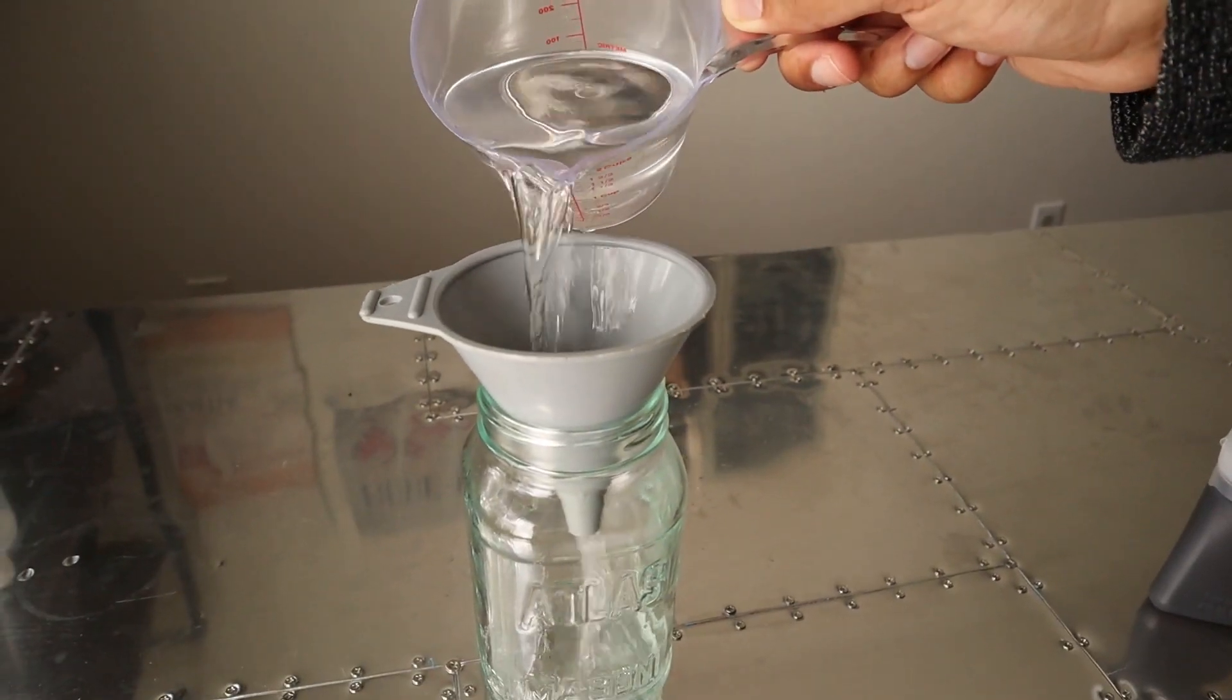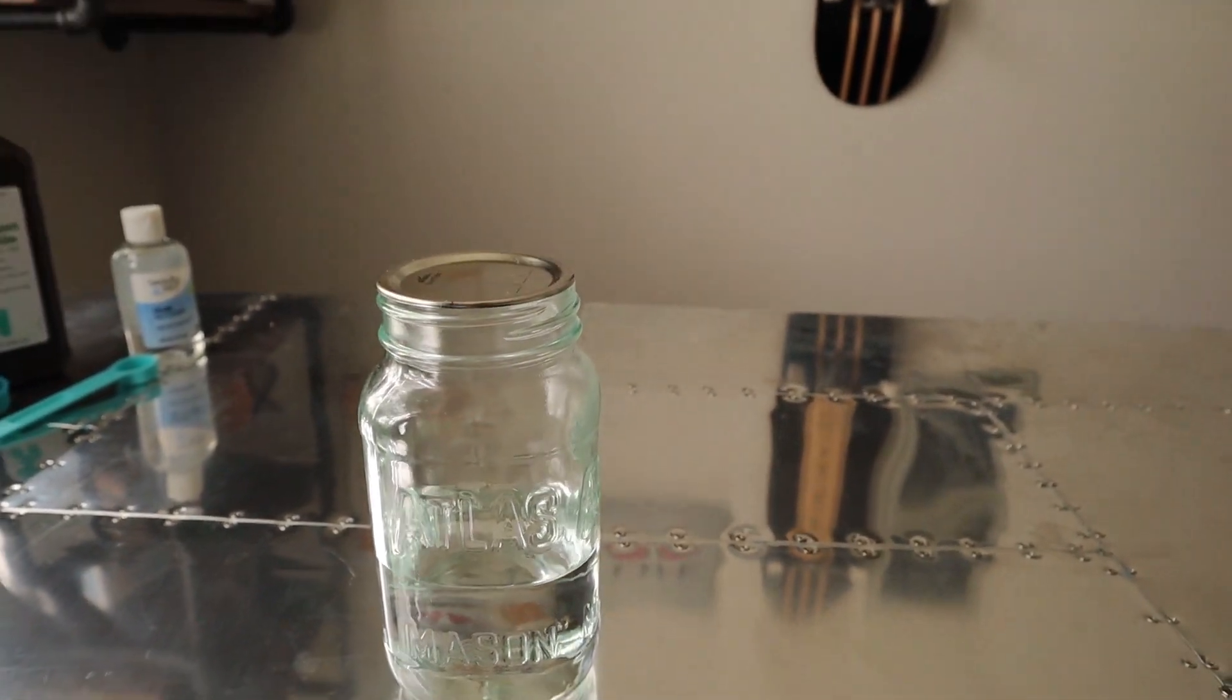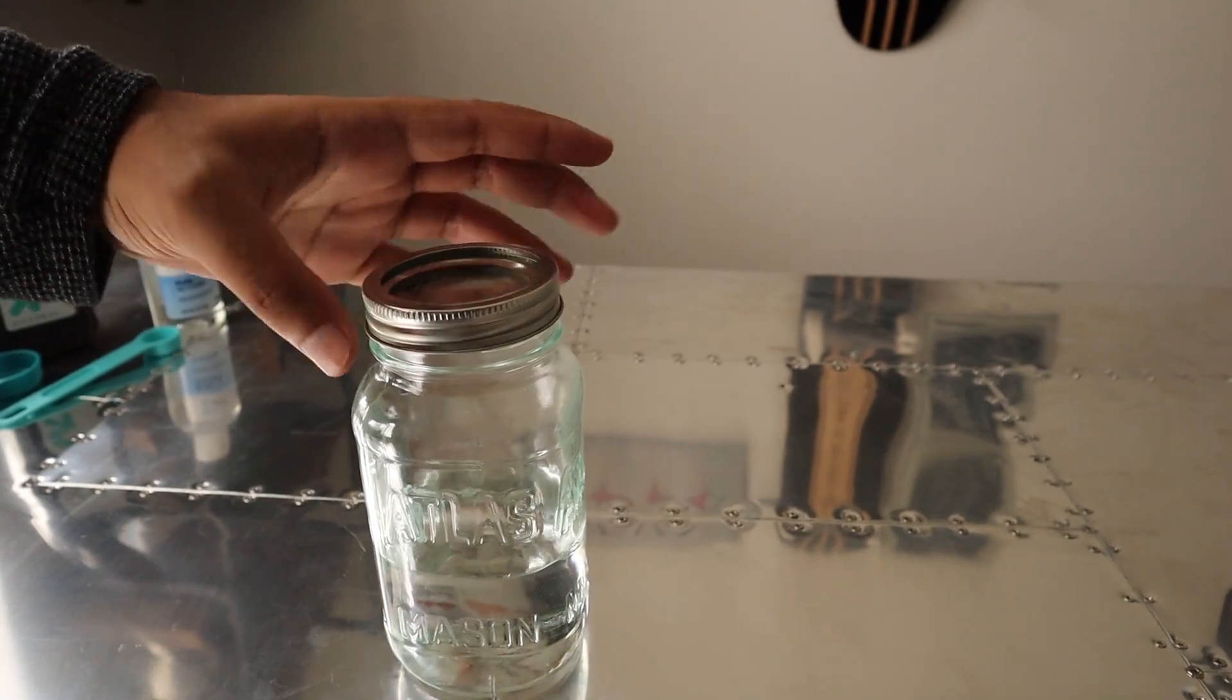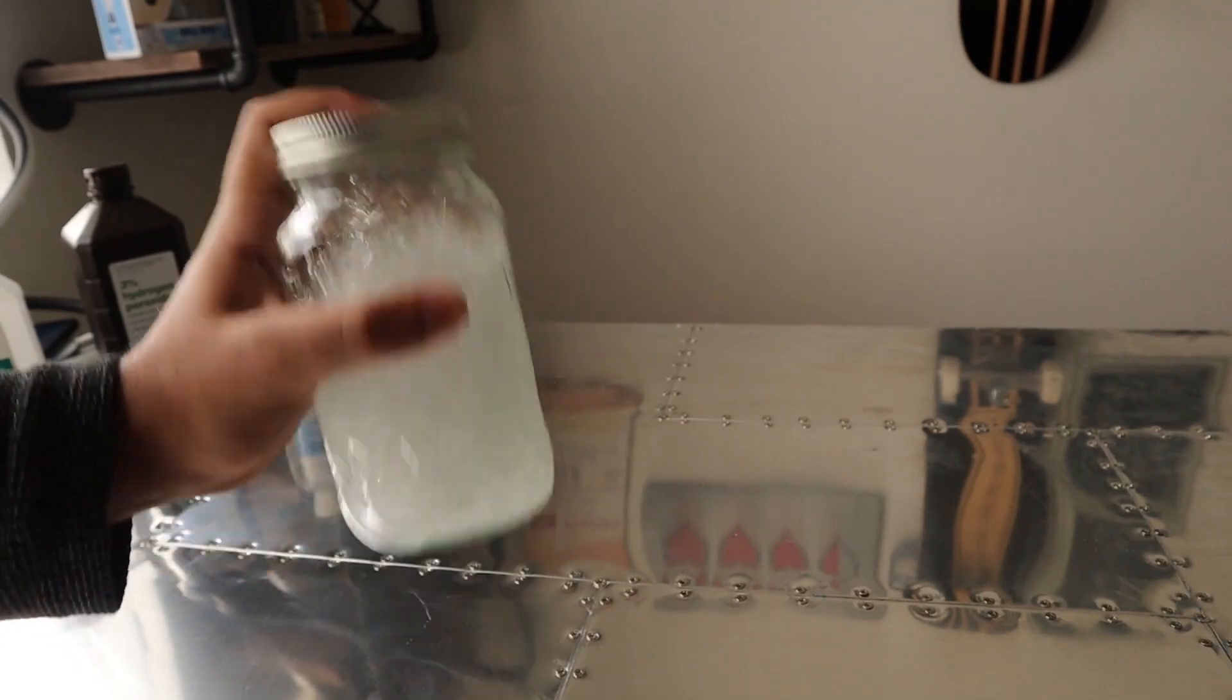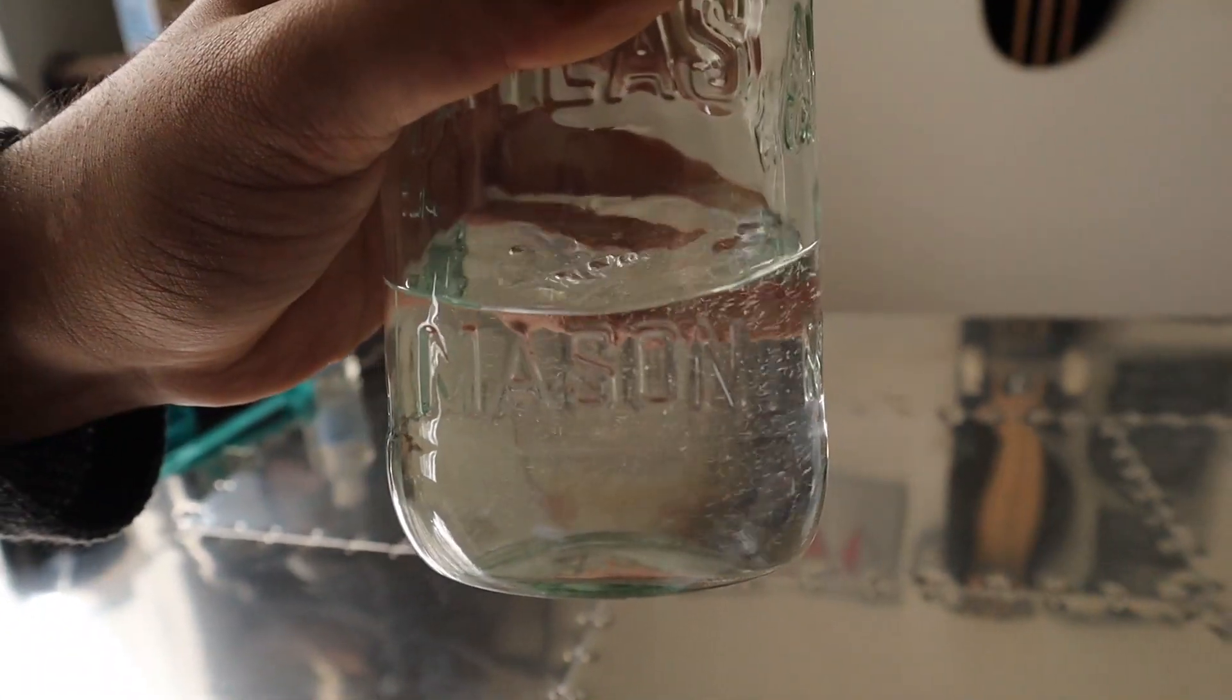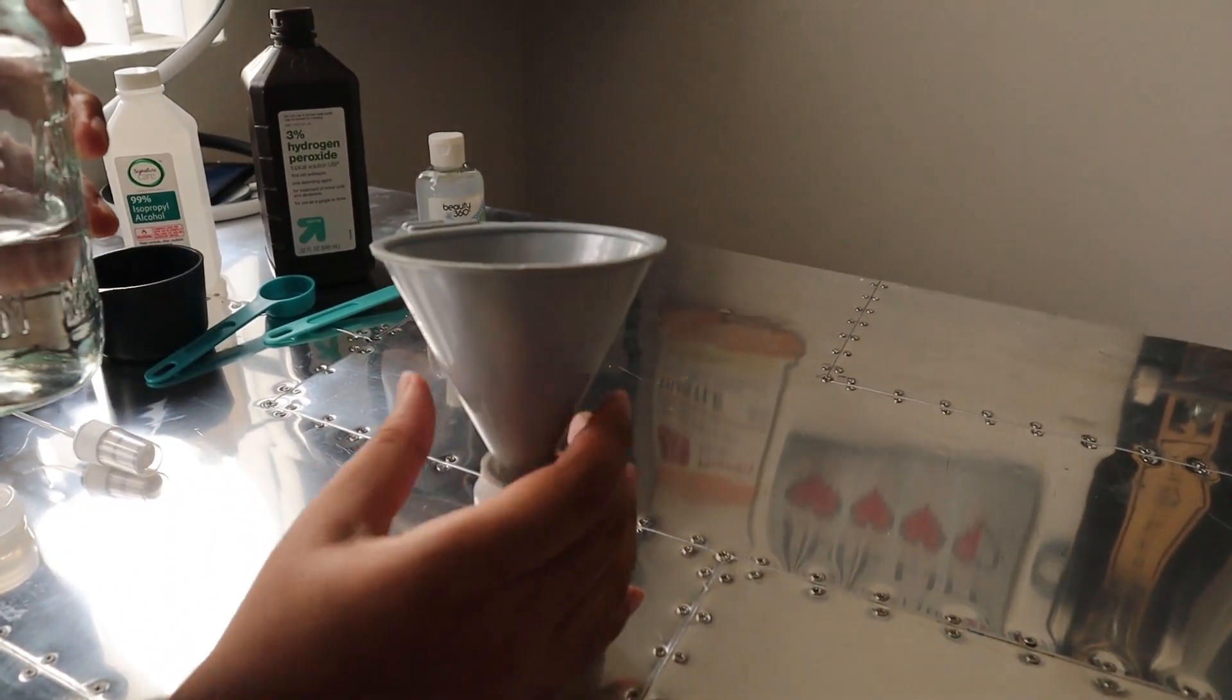You want to also make sure the jar you're using is clean as well. Cap on your jar securely and shake it up so that it all becomes fully mixed. Put the nozzle in your dark dispensing container, hold it firmly, and pour in your solution.